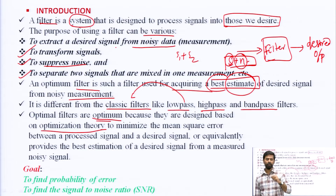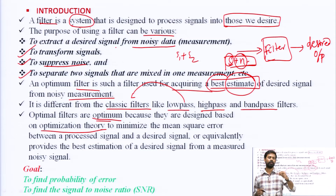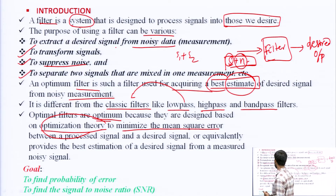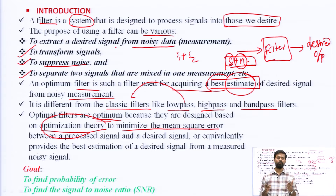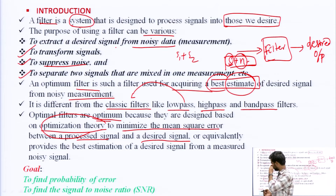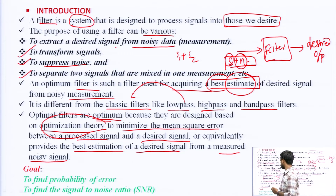Optimal filters are designed based on optimization theory — finding the maximum or minimum of something. This filter uses optimization theory to minimize the mean square error between the processed signal and the desired signal, or equivalently provides the best estimate of the desired signal from a measured noisy signal.